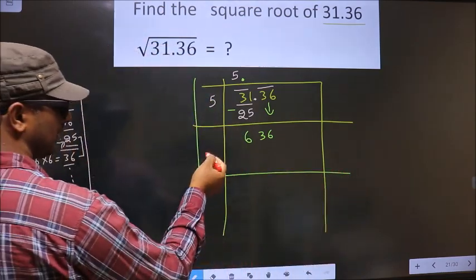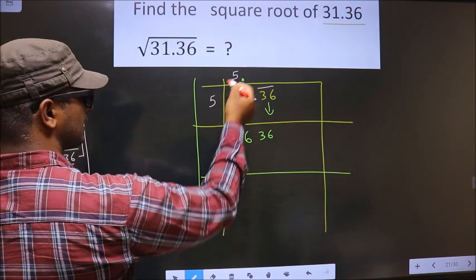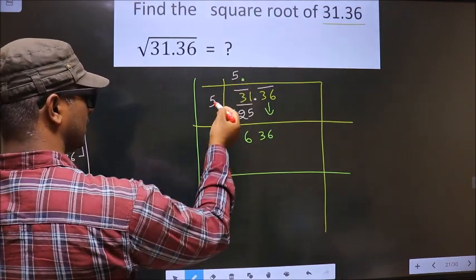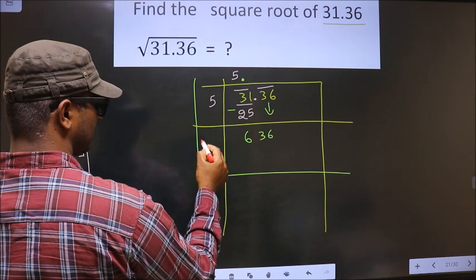Next, now we should add these two numbers and write here. That is 5 plus 5 equals 10.